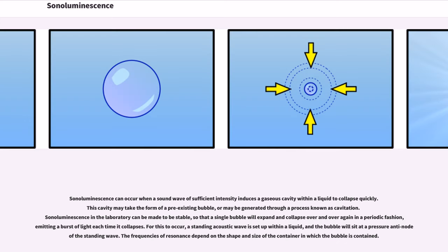Sonoluminescence can occur when a sound wave of sufficient intensity induces a gaseous cavity within a liquid to collapse quickly. This cavity may take the form of a pre-existing bubble, or may be generated through a process known as cavitation. Sonoluminescence in the laboratory can be made to be stable, so that a single bubble will expand and collapse over and over again in a periodic fashion, emitting a burst of light each time it collapses. For this to occur, a standing acoustic wave is set up within a liquid, and the bubble will sit at a pressure antinode of the standing wave. The frequencies of resonance depend on the shape and size of the container in which the bubble is contained.